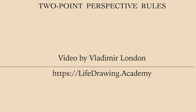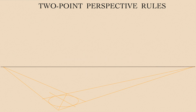In this video, Vladimir London, a Life Drawing Academy tutor, will explain the rules of two-point perspective. He will talk through the rules while drawing three cubes: one below the horizon, one above, and the third one at eye level.